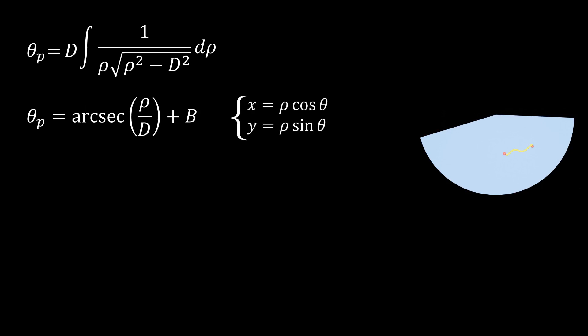Then using the relation between Cartesian and cylindrical coordinates, we can rearrange this to get an expression for y in terms of x. Since b and d are constants, this is of the familiar form y equals mx plus b, or a straight line.